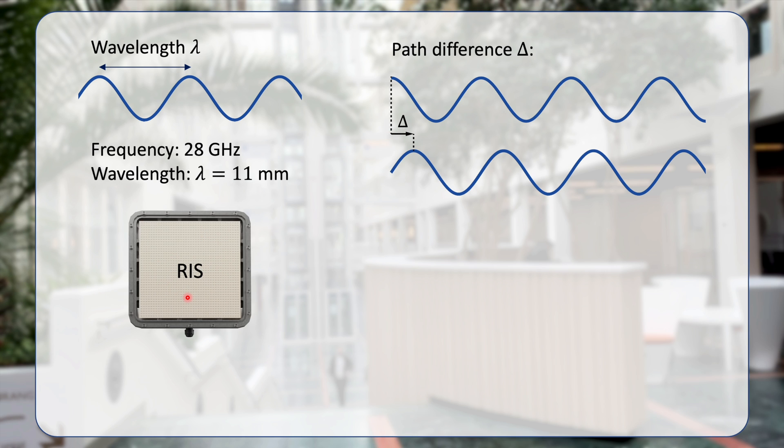The goal of the RIS is to compensate for this. Between two elements here, when we have this path difference of delta, we would like to shift one of the signals through an extra delay, so that the upper curve here is in line with the lower curve after the compensation, namely when the signal is reaching the receiver.